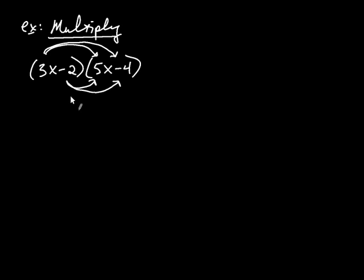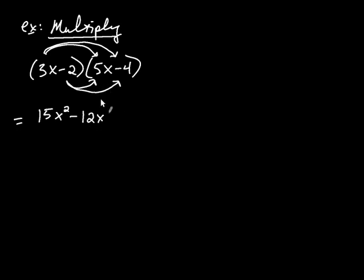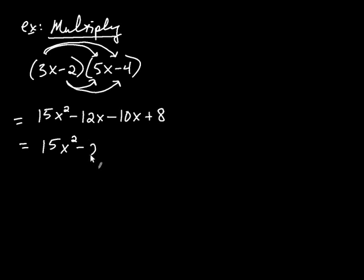When you're doing this problem on a test, feel free to draw these little arrows if that helps you remember how we do it. So, 3x times 5x is 15x squared. Then 3x times negative 4 is negative 12x. Negative 2 times positive 5x is negative 10x. And negative 2 times negative 4 is positive 8. Now we combine like terms: 15x squared, and negative 12 plus negative 10 is negative 22x, and then plus 8. So that's our answer.